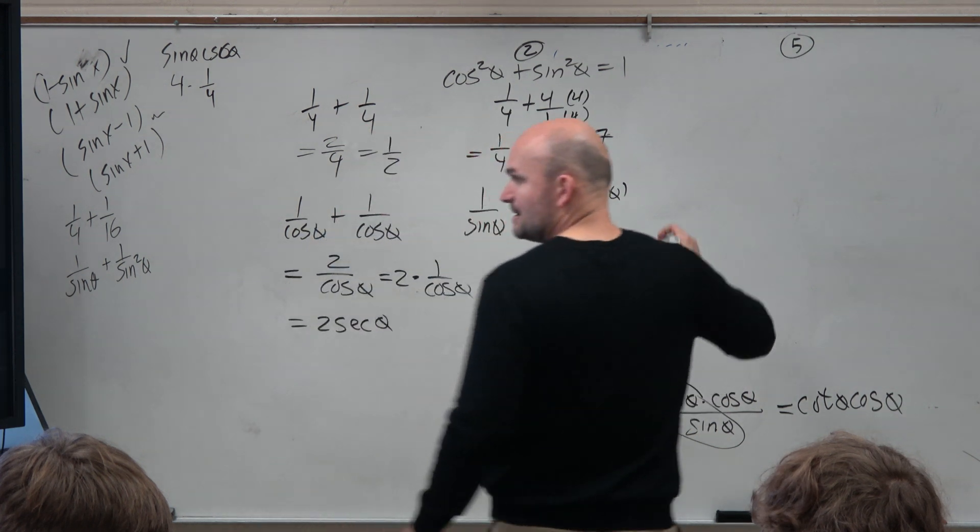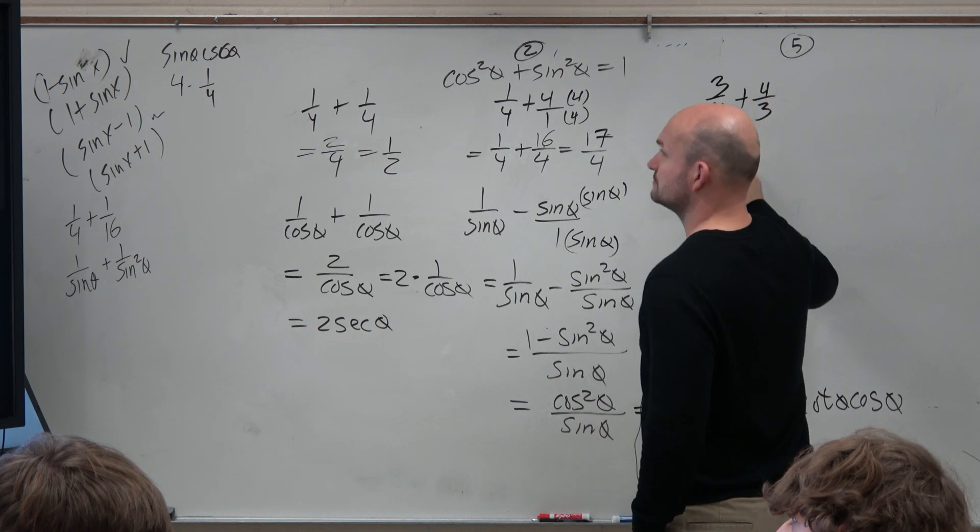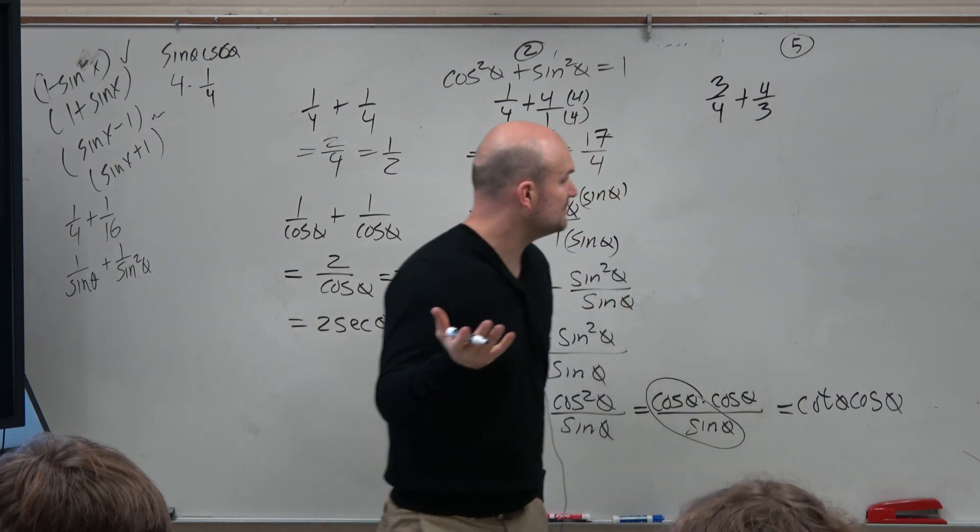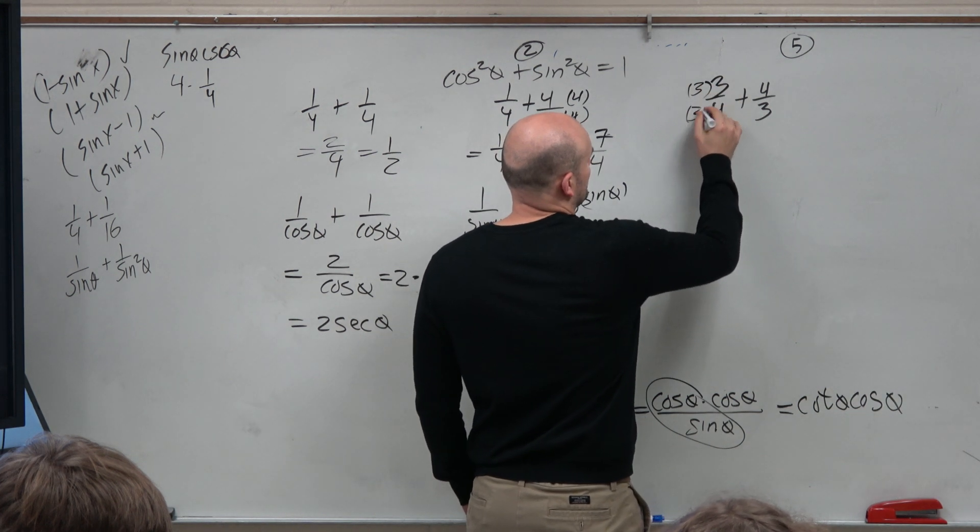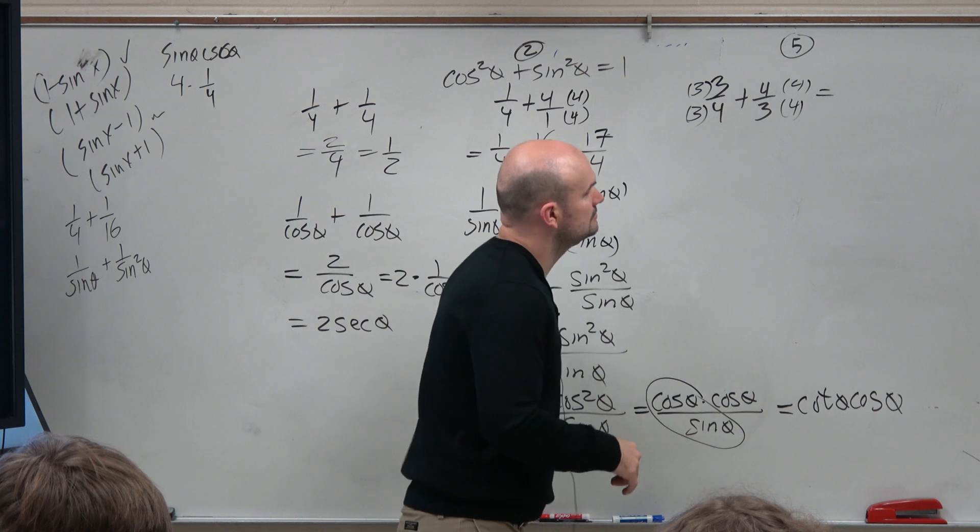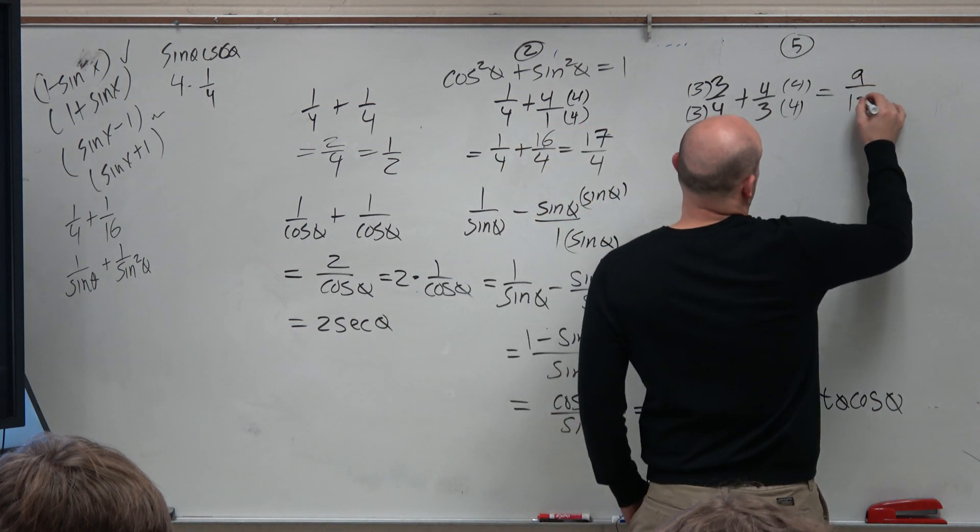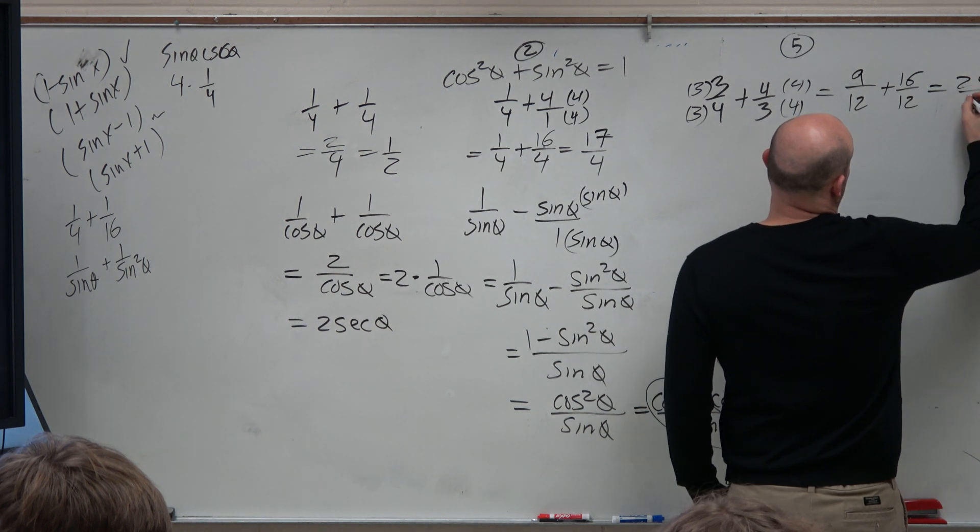All right. And that last example is 3 fourths plus 4 thirds. Well, in this case guys, obviously we need to get common denominators, right? So I'm going to multiply by 3 over 3 and a 4 over 4. So in this case, I'll have a 9 over 12 plus a 16 over 12, which is 25 over 12.